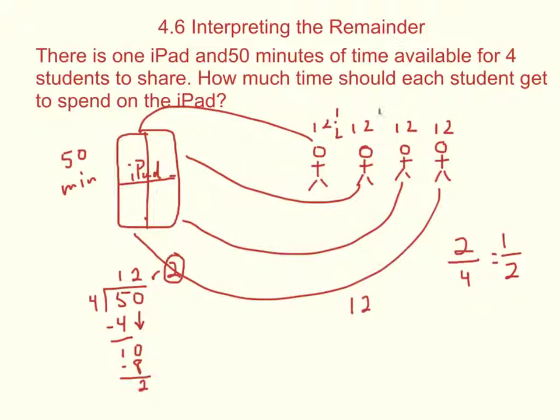So if we divide those four minutes up, and I know this isn't very clear, each student will get 12 and a half minutes on the iPad. So with this remainder, we continued dividing it and divided it amongst the four students. So they got their 12 minutes, and then we took the two minutes remaining, divided it up amongst the students, and we ended up with 12 and a half minutes for each student.